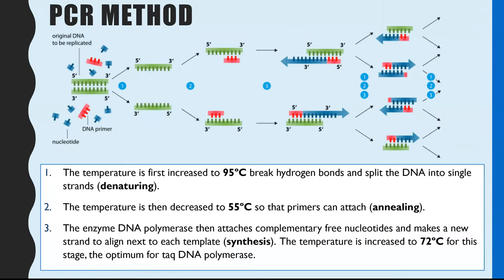So the method, number one, the first step, once you've put all of those ingredients into your thermocycler, the first step is what we call denaturing. And this is where the temperature is increased to 95 degrees C, and that will then break the hydrogen bonds between the two strands in your DNA double helix. So you then end up with two separate strands of DNA. So that's denaturing the DNA.